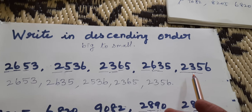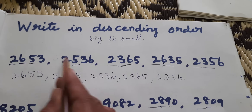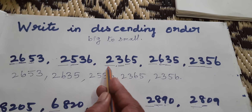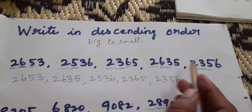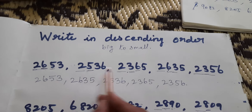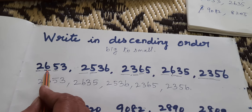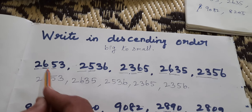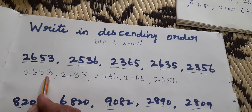Which one is the biggest number? All start with 2000, so we compare the hundreds place: 600, 500, 300, 600, 300. Which one is biggest? 600. So write the first number with 600 in hundreds place: 2653.